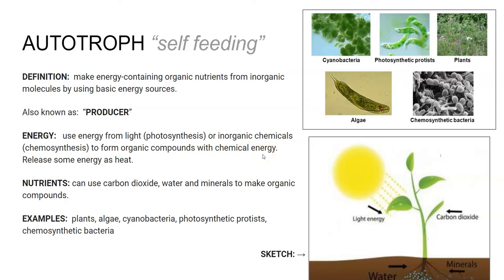When you burn that glucose — those organic compounds — you'll release some of that energy as heat. The nutrients that autotrophs use: carbon dioxide is very important because they use it to make glucose, and water and minerals are also used to make organic compounds. Examples include plants, algae, cyanobacteria, photosynthetic protists like Euglena, and chemosynthetic bacteria.